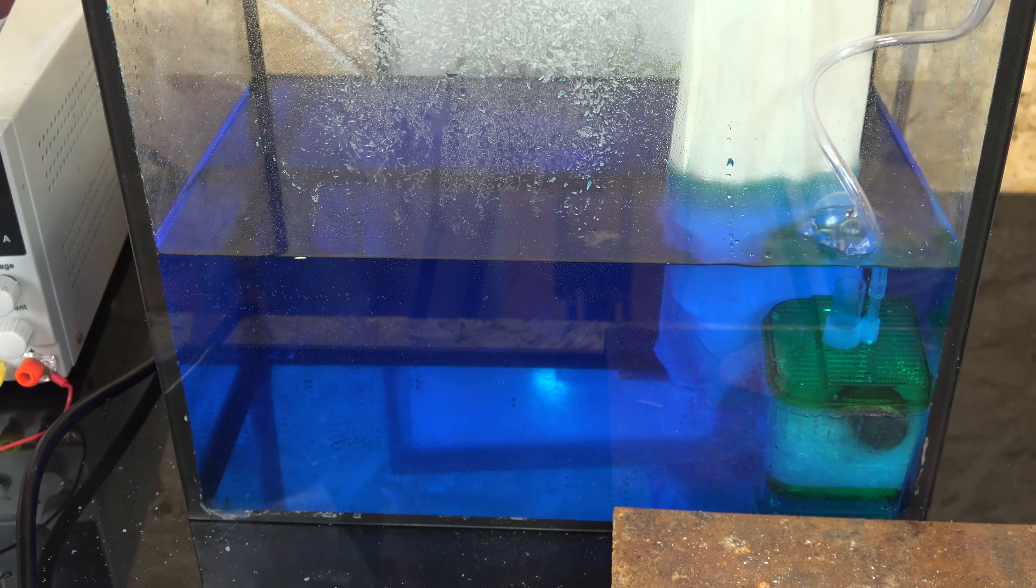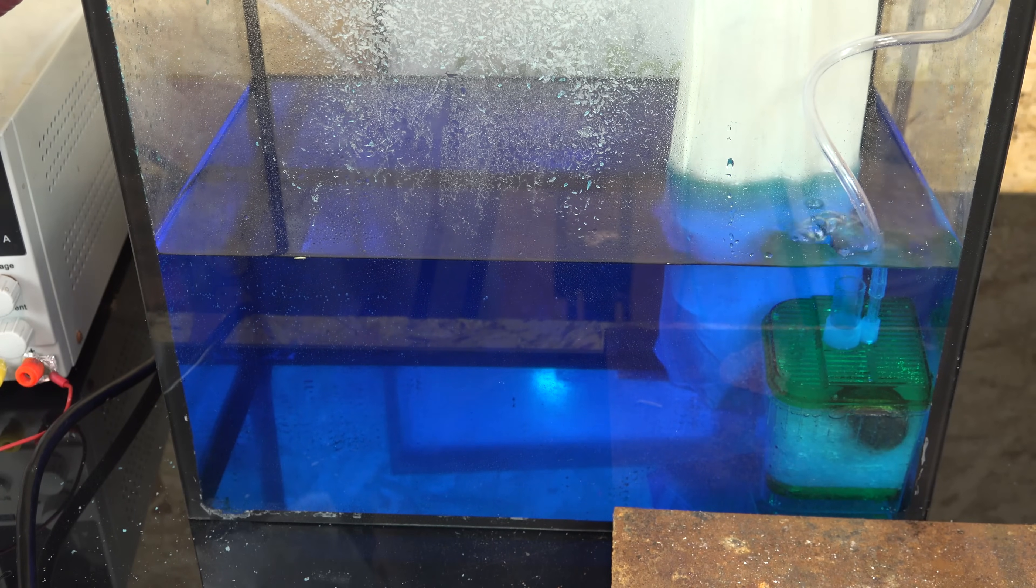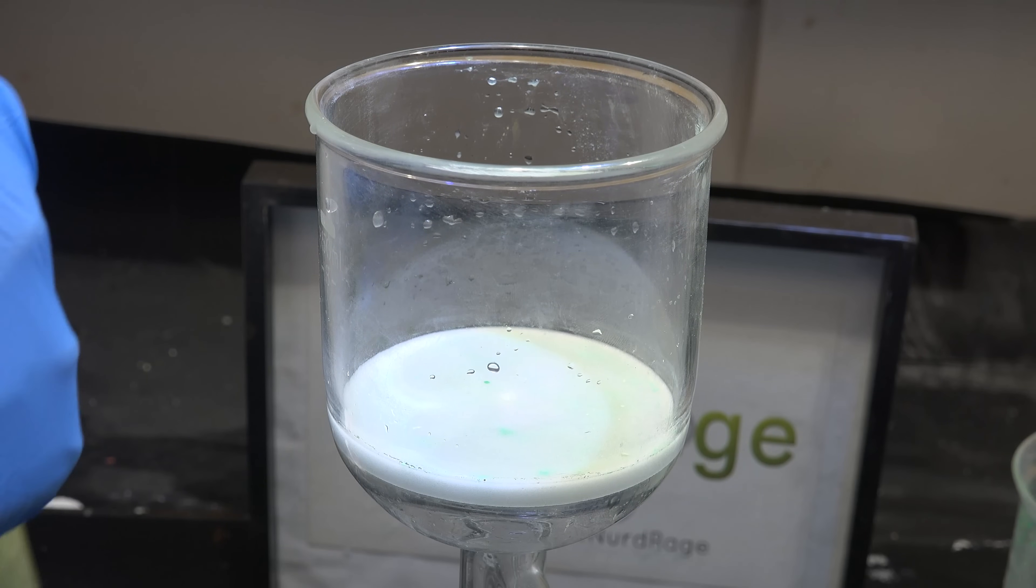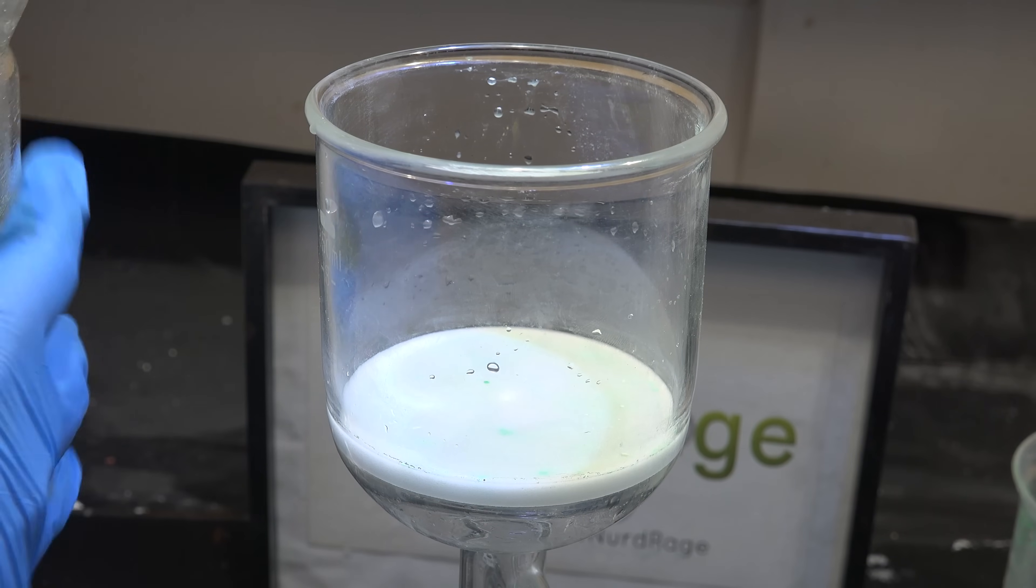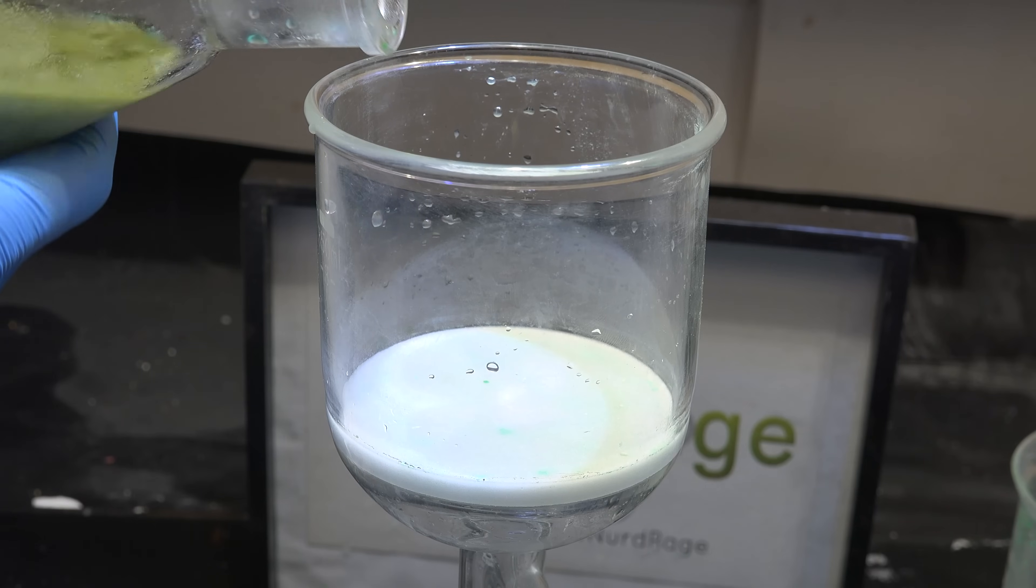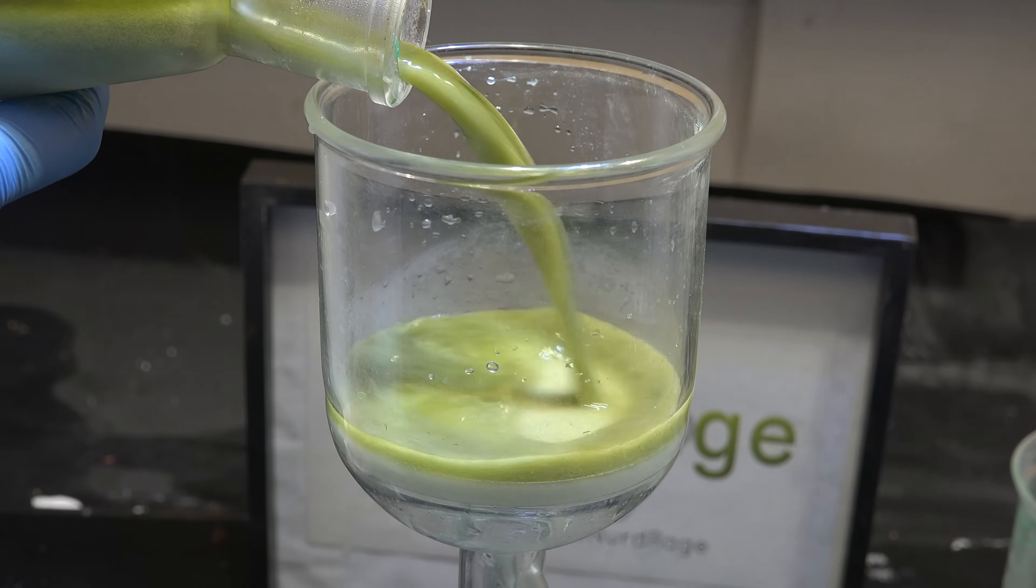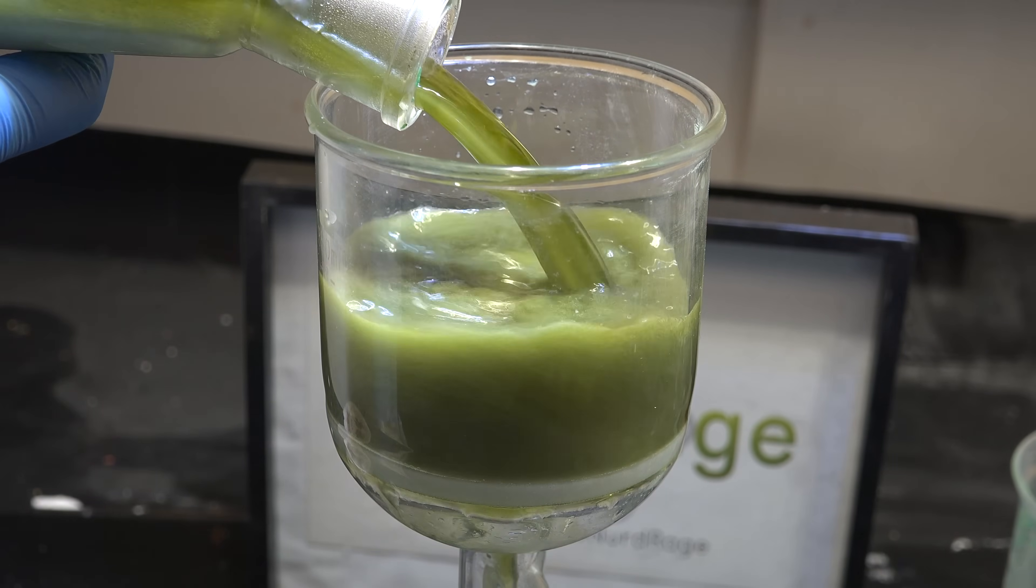Drain cleaner is the most common, but if you can't get that then battery acid is another. And you can even make sulfuric acid using various processes that we've already demonstrated on this channel, like the copper chloride process or the electrobromine process.